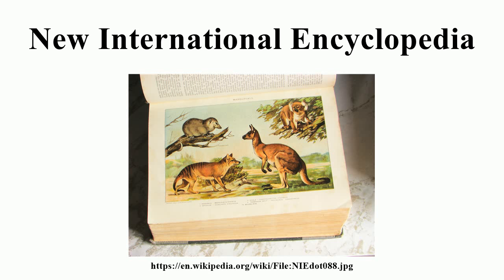The New International Encyclopedia was the successor of the International Cyclopedia. Initially, the International Cyclopedia was largely a reprint of Alden's Library of Universal Knowledge, which was a reprint of the British Chambers' encyclopedia with American editions.